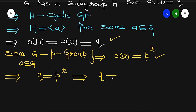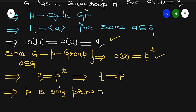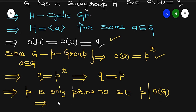Since both q and P are prime numbers, the expression must be unique. So we get q equals P. This means P is the only prime number that divides the order of G, which proves our result that the order of G equals P raised to power n.